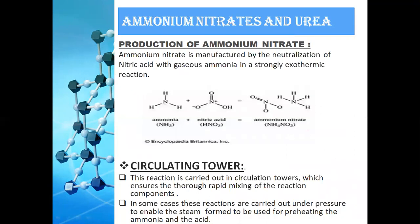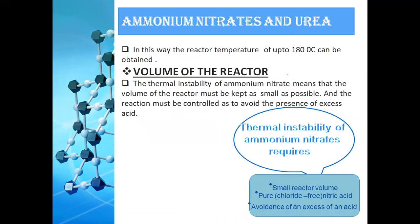The production of ammonium nitrate occurs through the neutralization of nitric acid with gaseous ammonia, and this reaction is strongly exothermic — meaning heat or energy is released. The reaction takes place in a circulating reactor, which ensures thorough mixing of the ammonia and the nitric acid. Sometimes high pressure is applied, producing steam that can be used for preheating the ammonia and nitric acid, allowing reactor temperatures of up to 180 degrees Celsius.